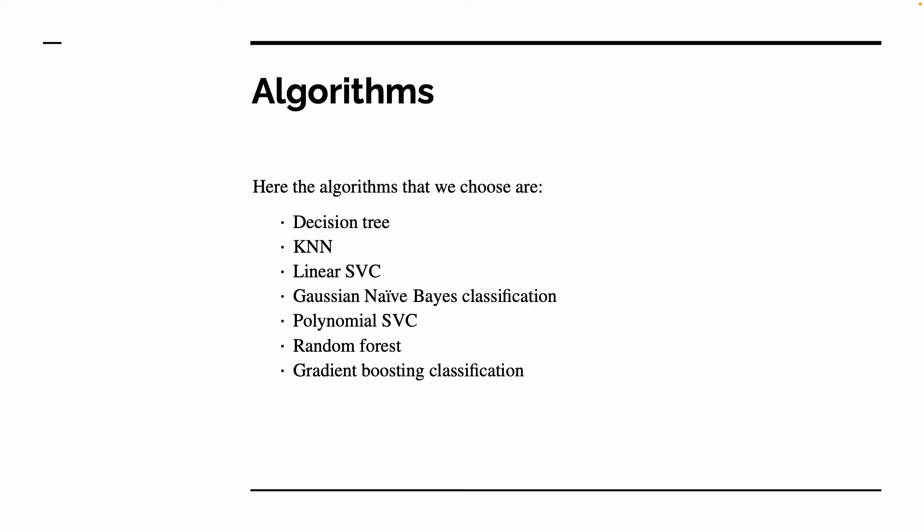We are using Decision Tree, KNN, Linear SVC, Gaussian Naive Bayes, Polynomial SVC, Random Forest, and Gradient Boosting classification. We will see which algorithm is best for this project, so that we can use that algorithm in the future if we get different types of crime data from a state or country.